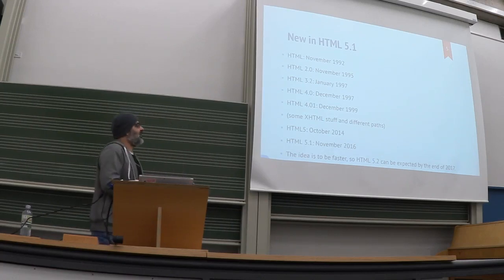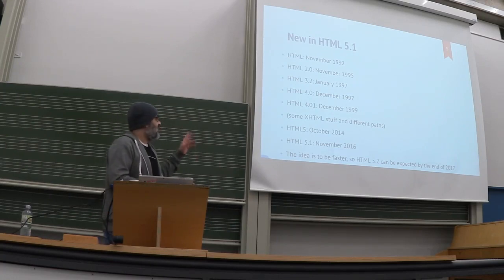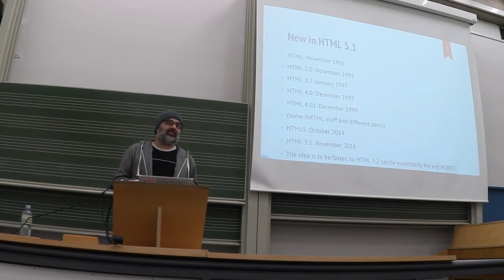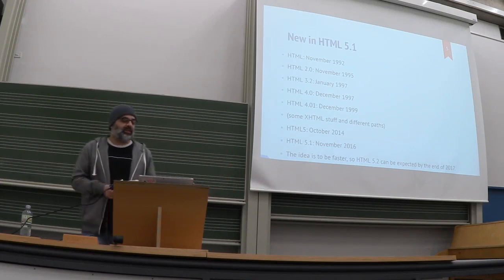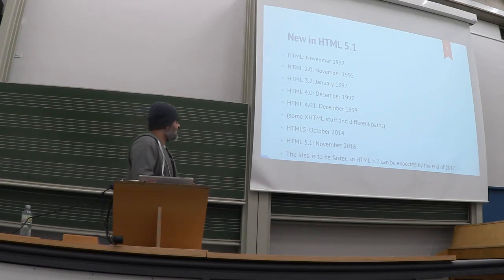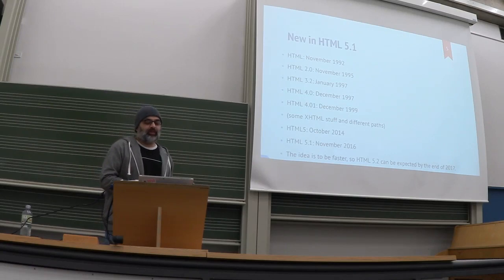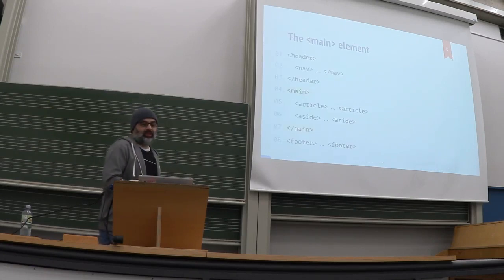This is a brief history of HTML. It started in 1992 and we had some progress in the early years. Then there was a big gap somewhere between 1999 and 2014 where there was of course some stuff going on, but there was no new specification in the sense that HTML5 provided. Nowadays HTML5.1 was released last November, and 5.2 can be expected by the end of this year or maybe the next year. The next iterations should come faster than before.